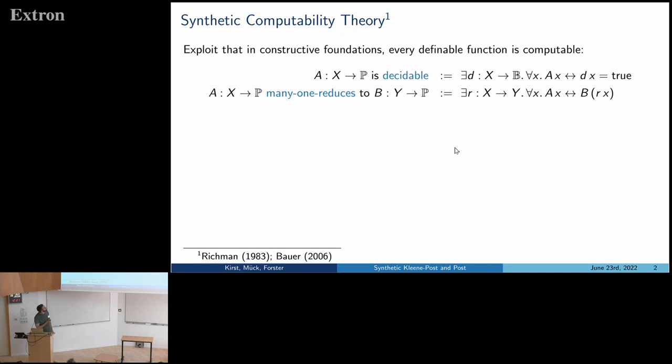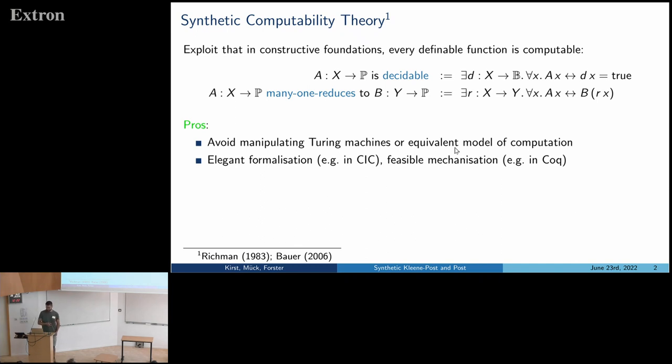Similarly, if you have a second predicate B on the domain Y, then A many-one reduces to B if there is a function translating between the domains, preserving the predicates in both directions. Again, no computability requirement. And why is this super cool? It's super cool because you can do computability theory without diving down to a concrete model of computation. You don't have to manipulate Turing machines or terms in untyped lambda calculus, which gives you extremely compact proofs. For instance, the normal proof that decidability transports back along many-one reduction is just function composition and nothing more. No manipulation of Turing machines.